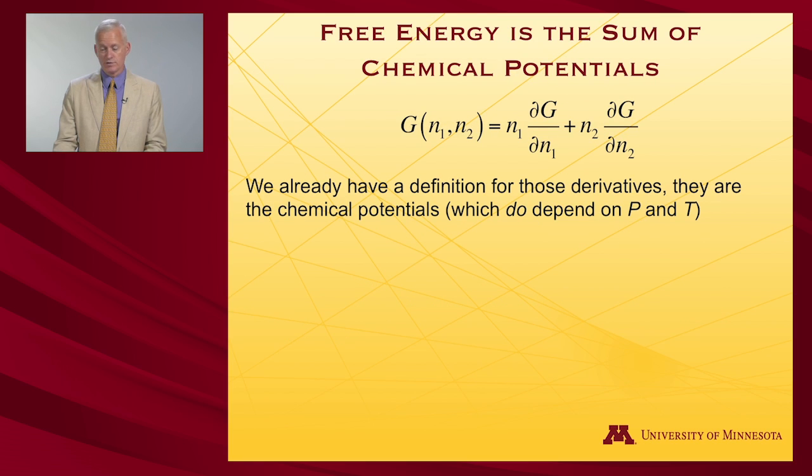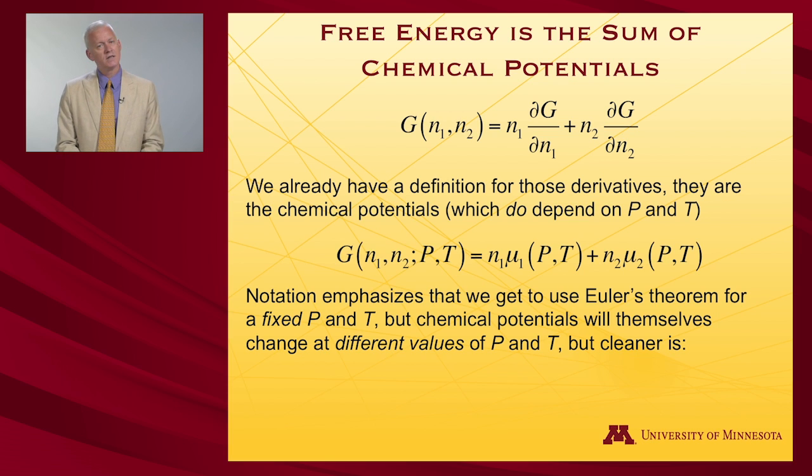If I were to write this in a really formal mathematical way to try to emphasize what's being held constant, I would write that the free energy, which is a function of the number of moles of component one and component two and takes as parameters fixed values of pressure and temperature—so P and T fixed—will be equal to number of moles of one times the chemical potential μ₁, which depends on pressure and temperature, plus n₂ times the chemical potential μ₂. That notation is there to really emphasize that we're holding P and T fixed. If we use a different P and T, the chemical potentials will be different, the total free energy will be different. Often we will not emphasize that again and again. We'll just write it in a somewhat shorter form: G = n₁μ₁ + n₂μ₂.